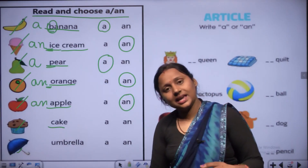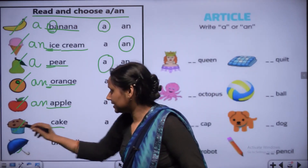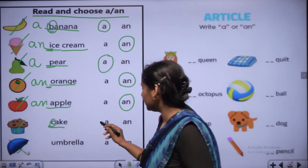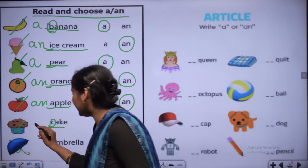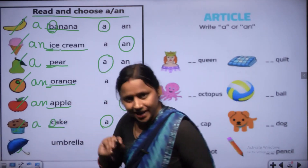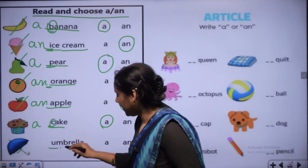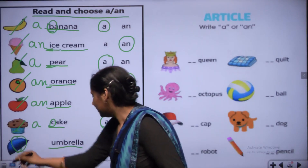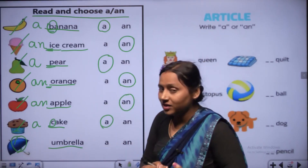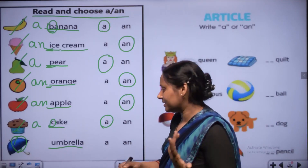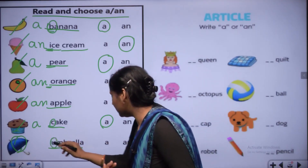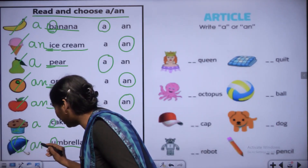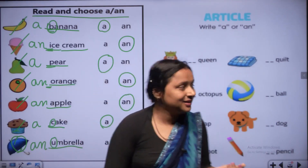Cake - C, A, K, E. C is consonant, so we use A - a cake. Umbrella - U, M, B, R, E, double L, A. U is the last vowel letter, so we use AN - an umbrella.